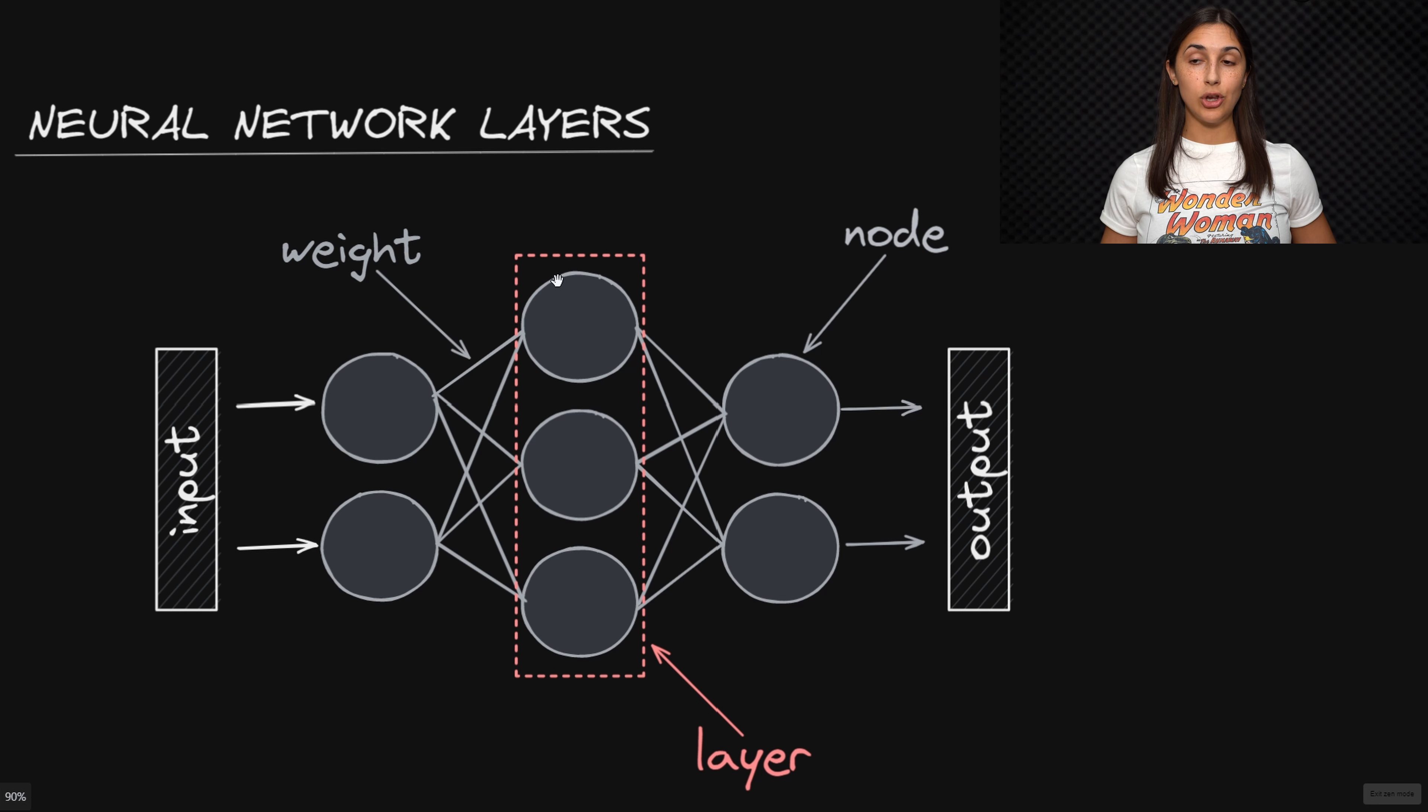As we can see, each node within this layer is fully connected to every node in the previous layer as well as every node in the following layer. A network that only makes use of fully connected layers is referred to as a fully connected network.